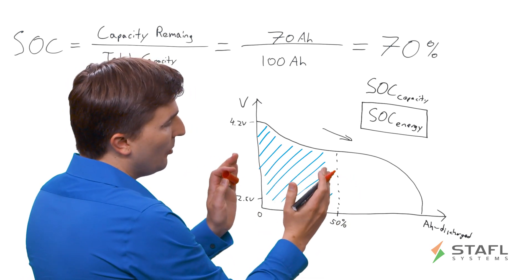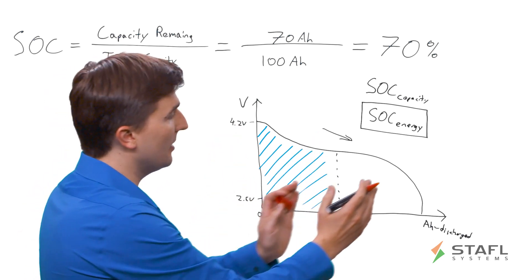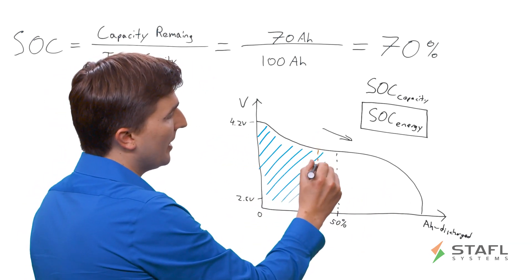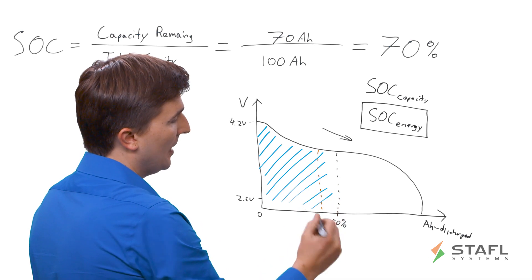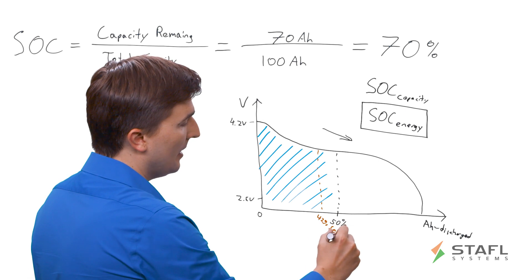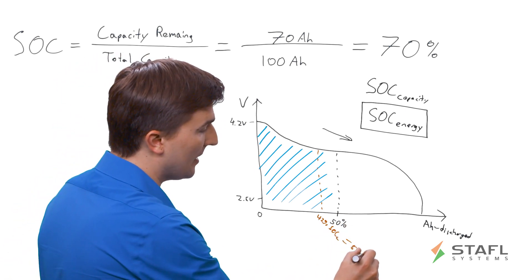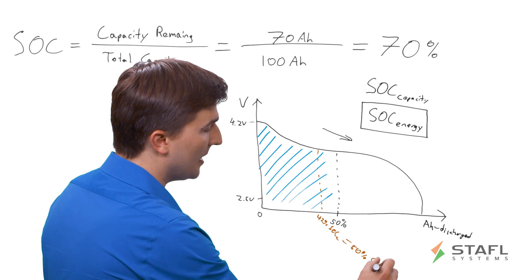Well, that would be where we would have approximately 50% of the area under the curve on the left side of the line as on the right side. That would be somewhere more like here. Say that this corresponds to a point of 42% SOC C. But this equals 50% SOCE.